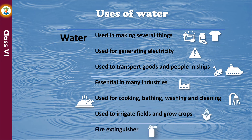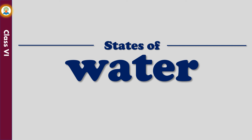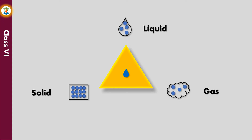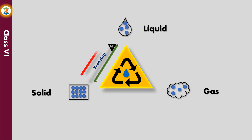Water occurs in all three states of matter: solid, liquid, and gas. These three states of matter are interconvertible. When water is cooled to 0°C, it changes to ice — the process by which a liquid changes to its solid form on cooling is known as freezing. When water is heated to 100°C, it begins to boil and changes into vapor — the process by which a liquid changes to its gaseous form on heating is known as vaporization.